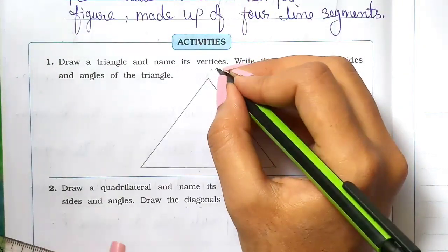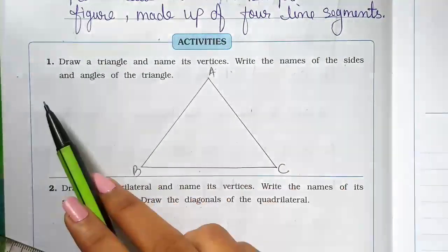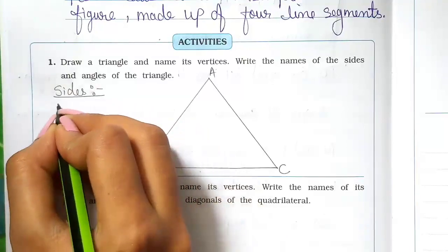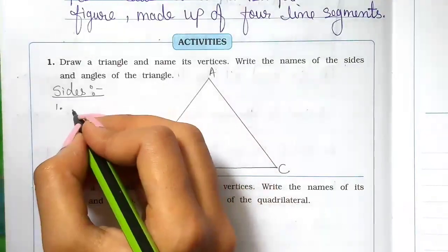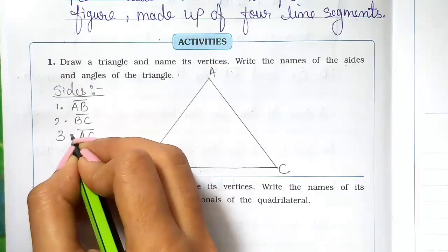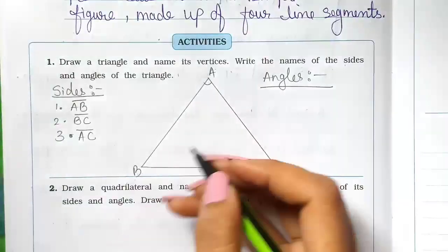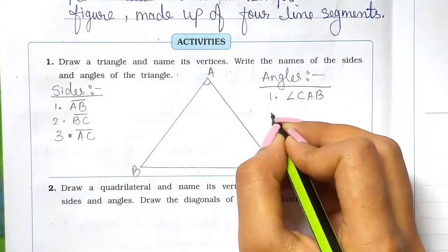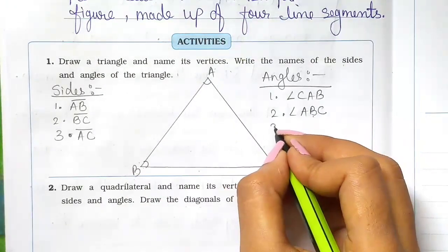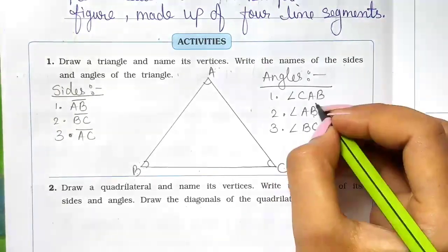For triangle ABC, write the names of the sides and angles. The sides are AB, BC, and AC. For the angles: first is angle CAB, second is angle ABC, and third is angle BCA.